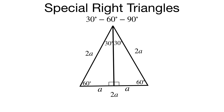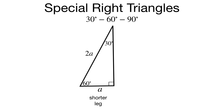Let's focus on just one of those 30-60-90 triangles. Hopefully we can see why the shorter leg opposite the 30 is A units long and the hypotenuse is 2A units long. But what about our longer leg length?